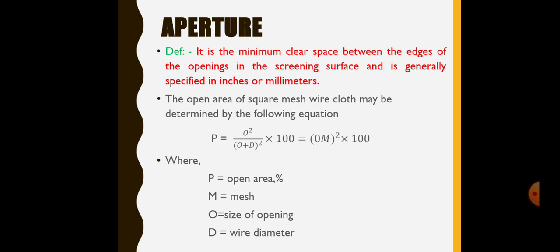What is aperture? The definition of aperture is, it is the minimum clear space between the edges of the openings in the screening surface and is generally specified in inches or millimeters. The open area of square mesh wire cloth may be determined by the following equation. P is equal to O square by O plus D square into 100 which is nothing but the O M square into 100.